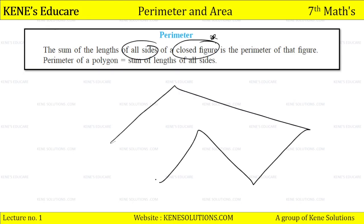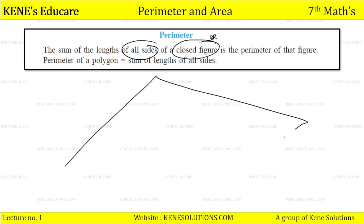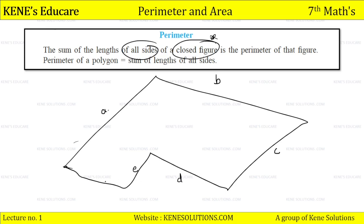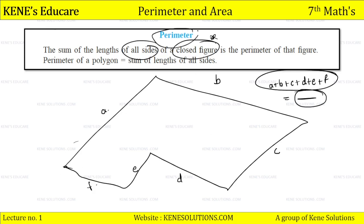I have a diagram drawn. This is a closed figure. This is a closed figure because the starting point and ending point are the same. The sum of the length of all sides of a closed figure — this closed figure has sides A, B, C, D, E — so A plus B plus C plus D plus E plus F is the total perimeter. So perimeter of a polygon is equal to the sum of length of all sides.